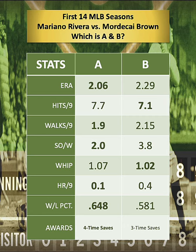Let's count it down. Five, four, three, two, one. And if you said Mordecai Brown is Stat Column A and Mariano Rivera is Stat Column B, congratulations, you got it right.